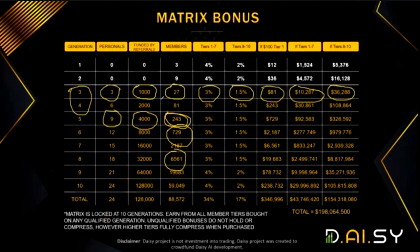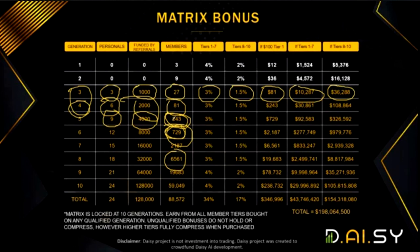If you are qualified for generation four but have people further below from spillover, you would typically not earn from them — but in the first 48 hours you will earn from all people in your 10 generations. This 48-hour window starts after you join, not after the smart contract launches. So if you join on January 7th, you have two days until January 9th to enjoy this special promotion.